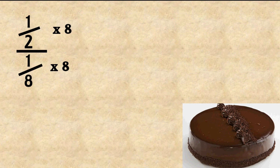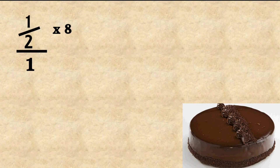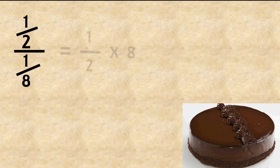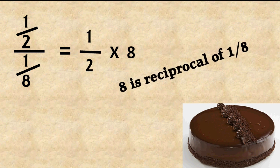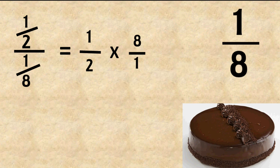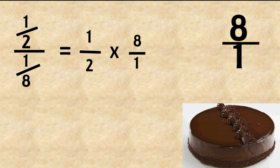For one-half divided by one-eighth, we can multiply up and down by the same number, so we multiply by the reciprocal of one-eighth. One-eighth multiplied by eight equals one — we've come back to multiplication from division. When we divide a number by a fraction, we multiply by its reciprocal. One-half divided by one-eighth equals one-half multiplied by eight over one. We just interchange numerator and denominator to get the reciprocal of a fraction.